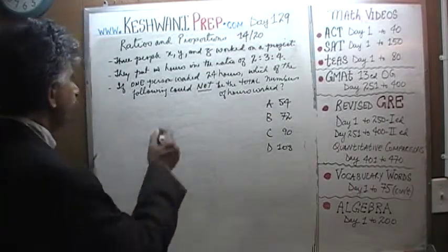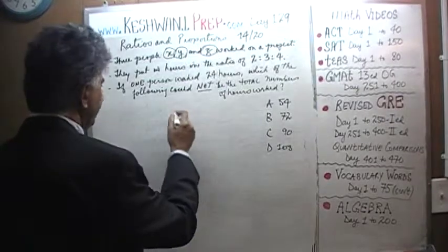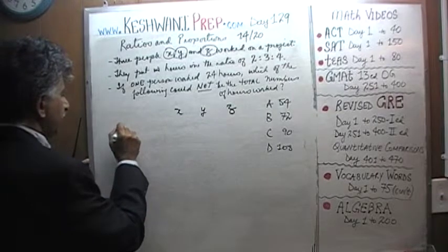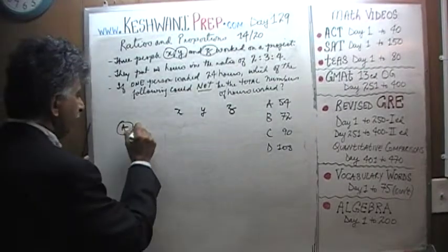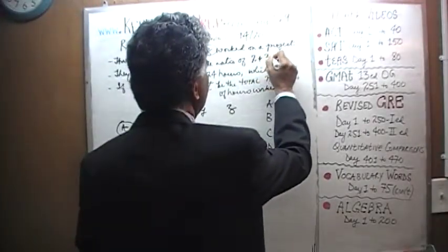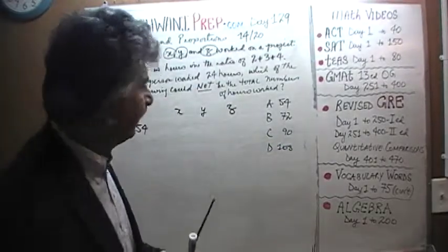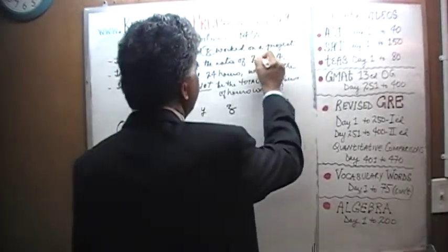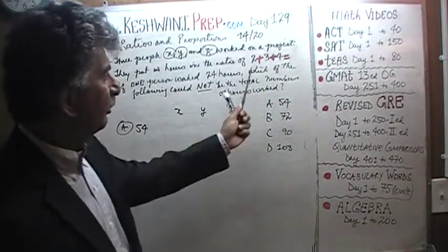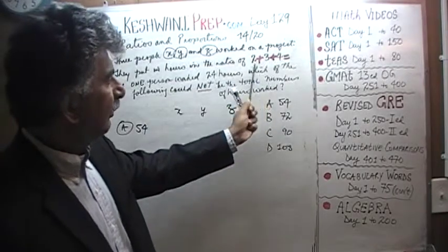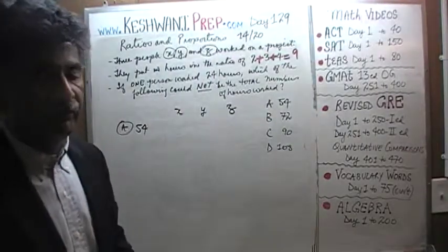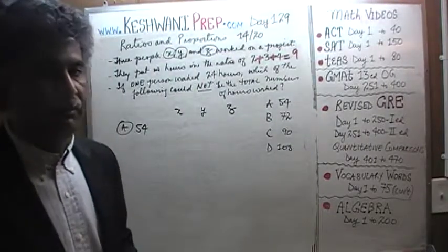Alright, let's begin. So we have three people, X, Y, and Z. Let's put them here. Question number, first answer choice says 54. Well, first thing we have to realize is that they work in the ratio of 2 to 3 to 4. Let's put it in a different color so we can see it. 2 to 3 to 4 tells us that 2 plus 3 plus 4, the total parts in this ratio problem are 9.